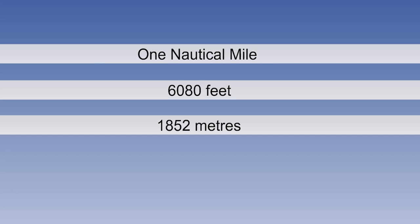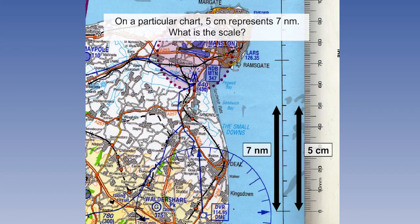Let's remind ourselves of how we did example 1 again, briefly, and then convert the units in a different way and see what the difference is. The question was, on a particular chart, 5 centimetres represents 7 nautical miles. What is the scale?